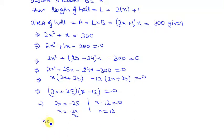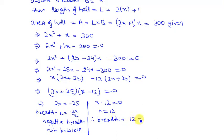This negative breadth is not possible. Therefore, breadth is equal to x which is 12. Length is 2x plus 1, which is 2 times 12 plus 1, equals 25.